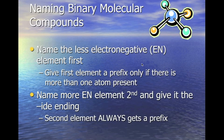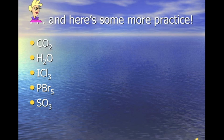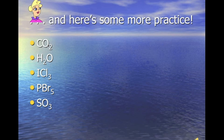We name the less electronegative element first — whatever goes first in the formula is the least electronegative. We name the more electronegative element second and give it an -ide ending. For carbon and oxygen: carbon is the least electronegative, so we write carbon. We have two oxygens, so di- plus oxide gives us carbon dioxide.